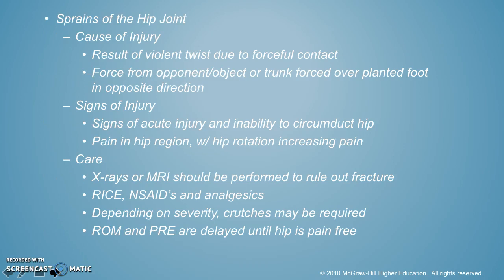These are sprains of the hip joint. Usually this happens because you violently twist due to a forceful contact — maybe a force from an opponent or an object, or your trunk is forced over a planted foot in the opposite direction. Signs of an acute injury would be pain and decreased range of motion. Particularly with a sprain of the hip joint, the person is not going to be able to circumduct it — bring it up, out, and around. They'd have pain in the hip region, and when they rotated it would be increasingly painful.